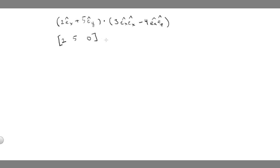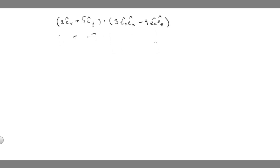In matrix form that would be [2, 5, 0] dotted with a matrix whose entries are 3, 0, minus 4, and the rest are zeros. Although you can do the math with this second way, I personally find it easier to work with the former setup so that you can see how the process of taking the dot product is identical to when we dotted two vectors earlier. We'll distribute as we would normally, and since we'll end up with four terms, I'll write all four out to see the process.